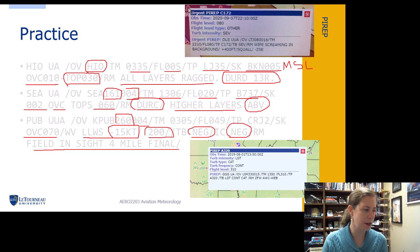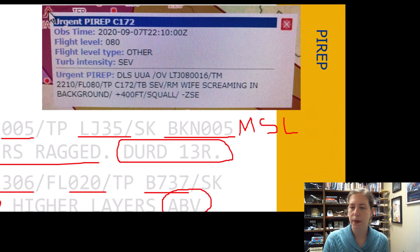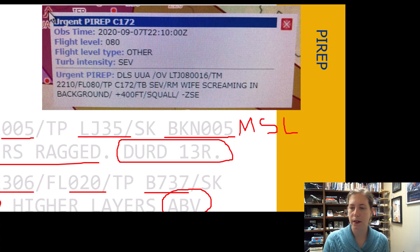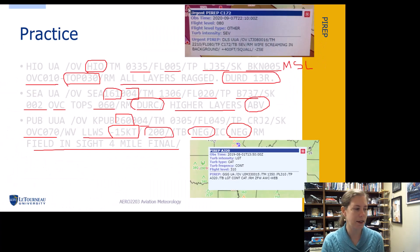Here's a really crazy one that is a real fire up that my friend sent me. This is a Cessna 172, severe turbulence, remark wife screaming in the background. They gained 400 feet and it was like some kind of a squall line. I don't know what you're doing in a Skyhawk in a squall line. And the wife screaming in the background is a little scary, right?